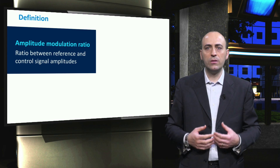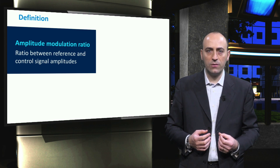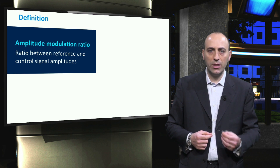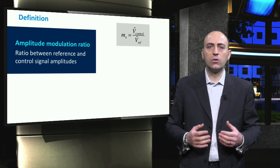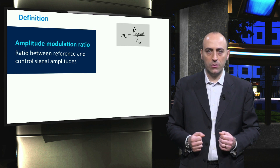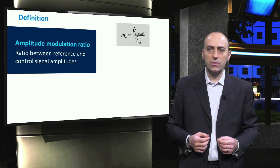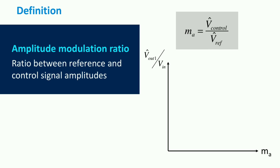To describe the different operative modes of the PWM inverter, it is useful to define the amplitude modulation ratio. This is the ratio between the control signal and the reference signal peak amplitudes. When talking about inverters, the signal considered is the voltage. It is possible to enumerate three modes of operation depending on how the ratio between input and output voltage changes with the amplitude modulation ratio. The first mode is called the linear mode. Here, if the input voltage is constant, the amplitude of the first harmonic of the output voltage can be modified linearly by changing the amplitude of the sinusoidal control signal.